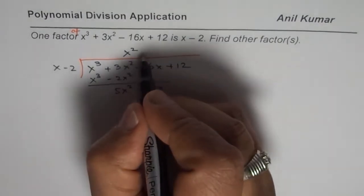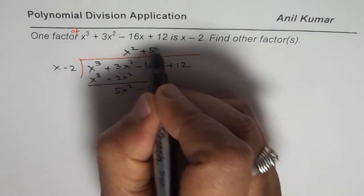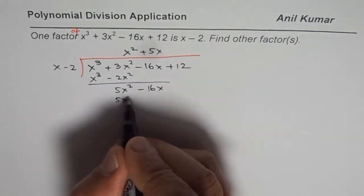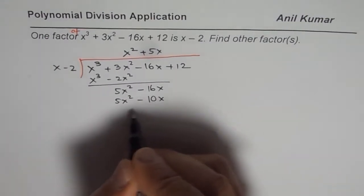Now 5x², that means we should multiply the divisor by 5x. So we get 5x² minus 5 times 2 is 10, we get 10x.